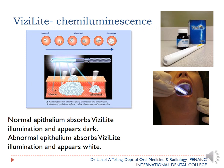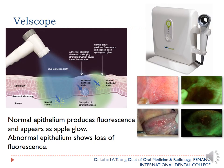ViziLite is a chemiluminescence technique using a small stick-like glowing instrument. Normal epithelium absorbs the illumination and appears dark, while abnormal epithelium reflects the ViziLite illumination and appears white — the white area being the one requiring biopsy for suspected pre-cancer.